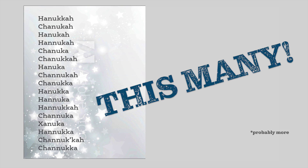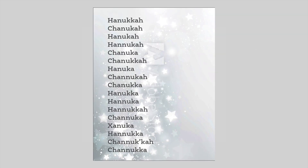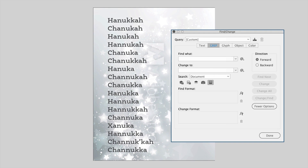GREP is basically finding patterns of text and then doing something with that text. In this case, we want to take our preferred spelling and replace all other instances of the word with that particular spelling. We're going to look at this list of different ways it may be spelled and make sure the formula we write will work for all of them. We'll use the GREP tab in the Find/Change dialog box to find these patterns.